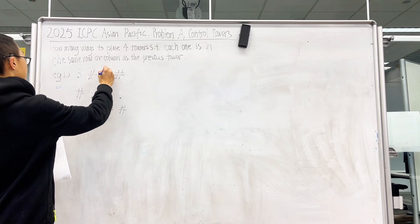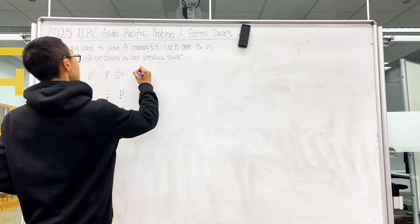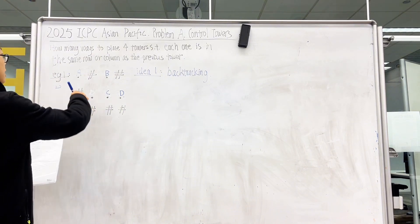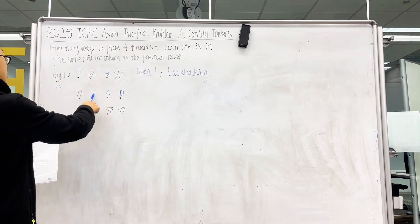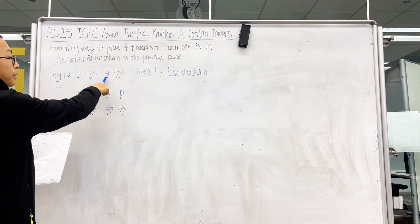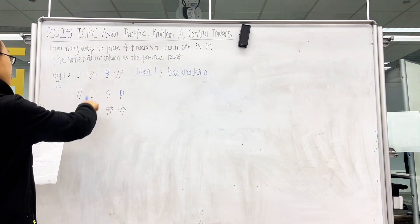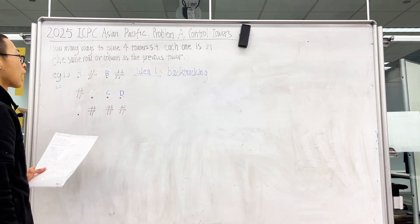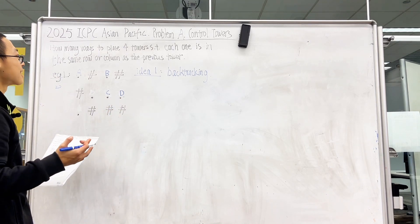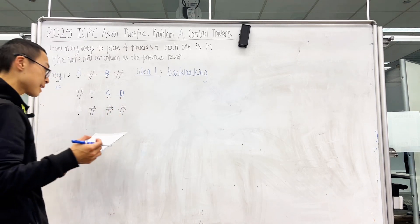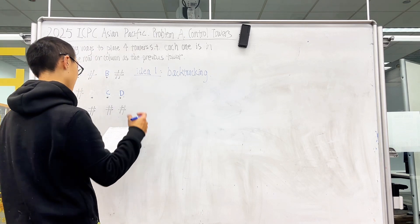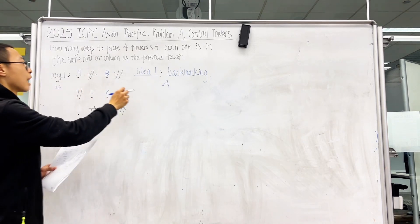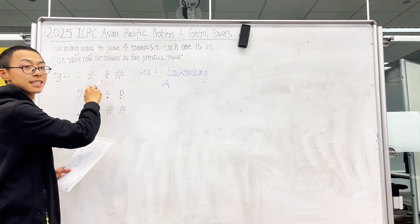Let's draw the example again. Idea one: backtracking. What's the original thought? Just try A at each of the spots, then try B at all the valid locations, then place C and then place D. How many ways are there? We place A first, like this.